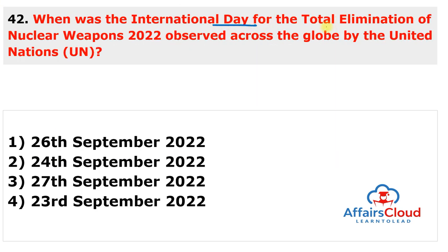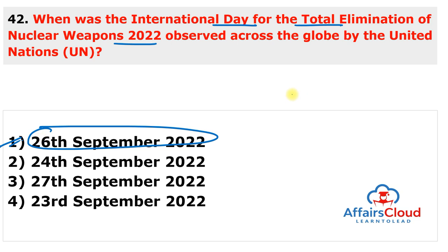The International Day for the Total Elimination of Nuclear Weapons 2022 was observed on 26th September 2022 to raise public awareness about the risks created by nuclear weapons. This day was first observed in 2014 on 26th September.